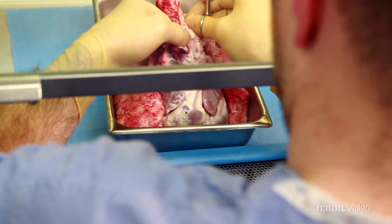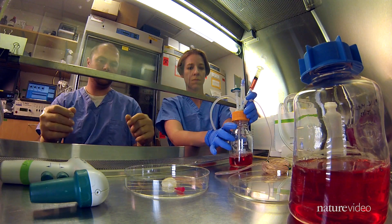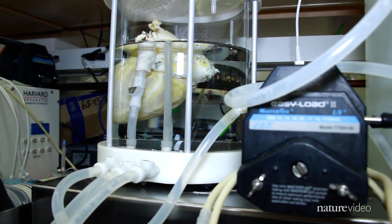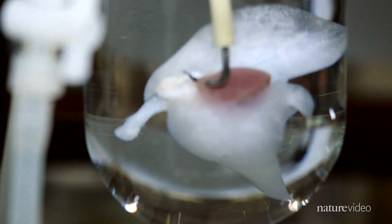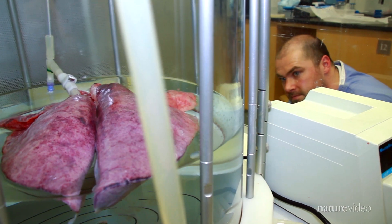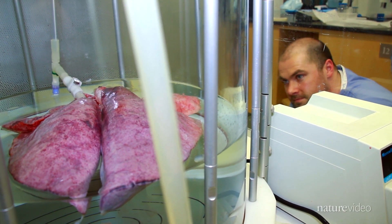Using donor organs that would not normally be suitable for transplantation, Ott's team reanimates them by first washing away native cells with a soapy solution. What's left behind is a natural scaffold of structural proteins that can be repopulated with stem cells taken from a patient.